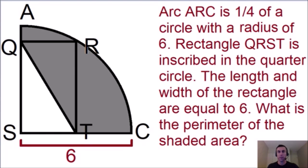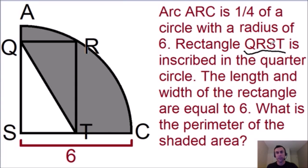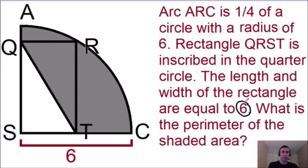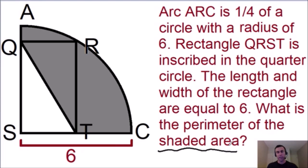Here we have a riddle that I thought was really fun. Arc ARC is a quarter of a circle with a radius of six. Inside this quarter circle, we have a rectangle QRST inscribed inside it. The length and width of that rectangle added together are equal to six. The question is: what is the perimeter of the shaded area?